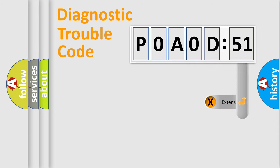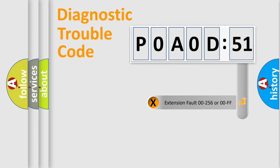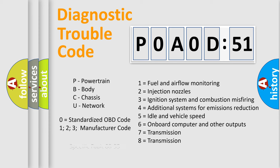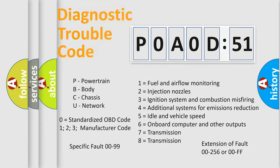The add-on to the error code serves to specify the status in more detail — for example, a short to ground. This division is valid only if the second character code is expressed by the number zero.